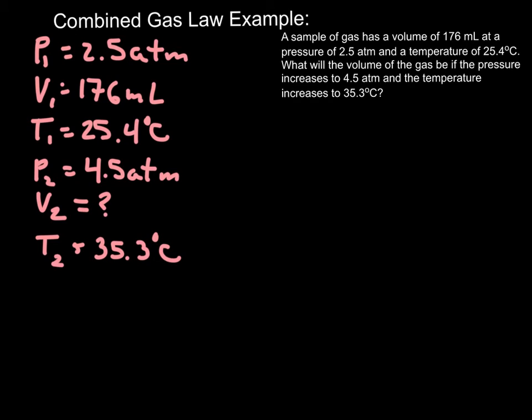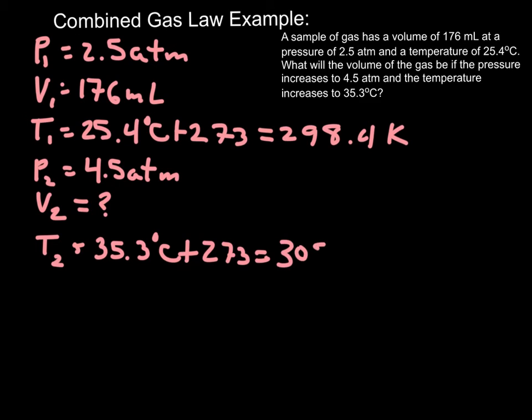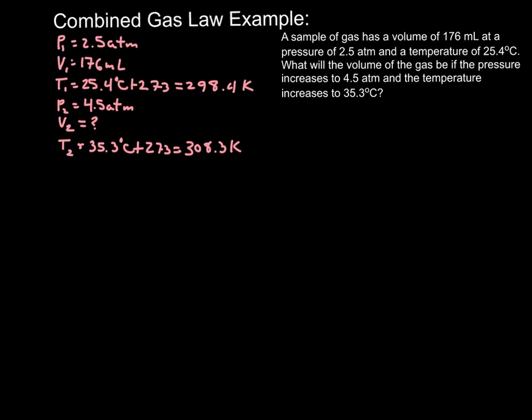Now, of course, before we do anything else, we want to convert our temperature to Kelvin, so we're going to add 273, and we get 298.4 Kelvin and add 273 here for our second temperature, and that will give us 308.3 Kelvin. Let me shrink that up.